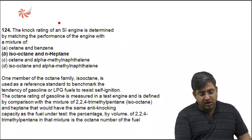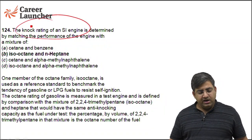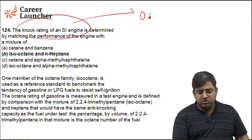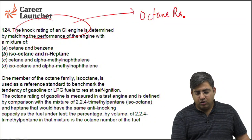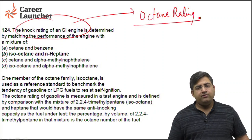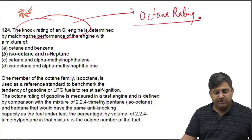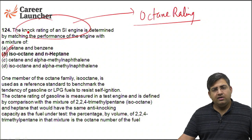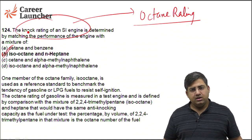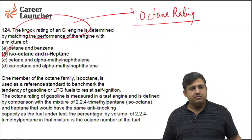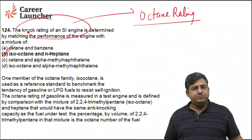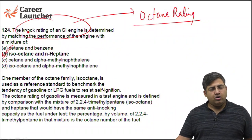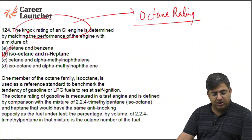The knocking rating of an SI engine is determined by matching the performance of the engine with a mixture of isooctane and N-heptane — this is the octane rating. The right answer is B. In a CI engine, the cetane number is used instead.